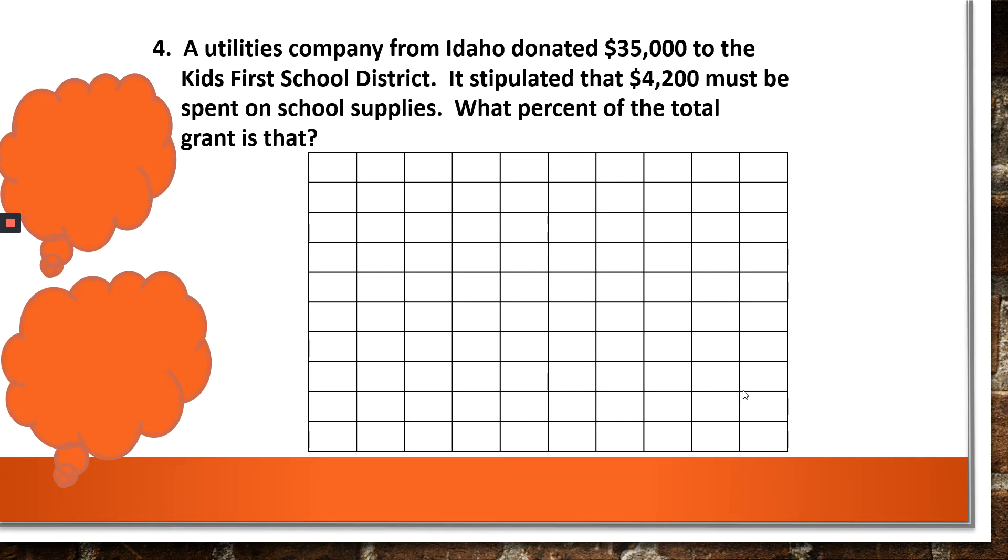A utilities company from Idaho donated $35,000 to the kids' first school district. It stipulated that $4,200 must be spent on school supplies. What percent of the total grant is that? Well, if you notice, I put a couple of think clouds here because we're going to work it a couple of ways. What's our whole? $35,000. Nice. Well, I'm going to have $35,000 divided by 100, just like we've been doing, and that will give us $350. Now, the goal is to see how many boxes it takes to fill up for $4,200.